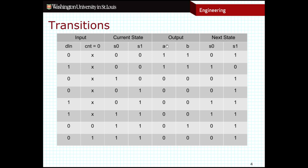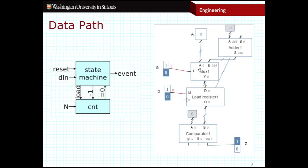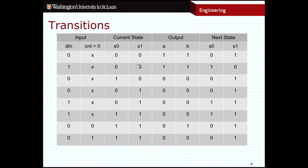And then our outputs. You'll notice that the outputs that I have listed here are A and B. Those are the outputs that go to our data path. So the actual event output in this particular case is very easy. The event output is whatever this count equals zero value is that's coming into the state machine. So that's a very easy output.